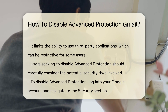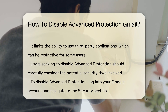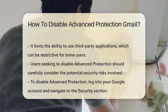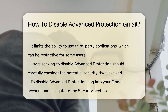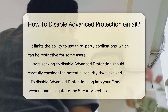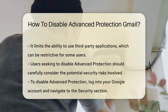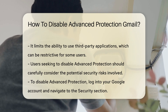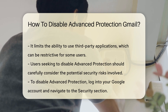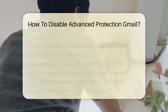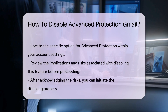Disabling this feature may expose your account to increased security risks. To begin the process of disabling Advanced Protection, you must log into your Google account. Navigate to the security section of your account settings. Here you will find an option specifically for Advanced Protection.